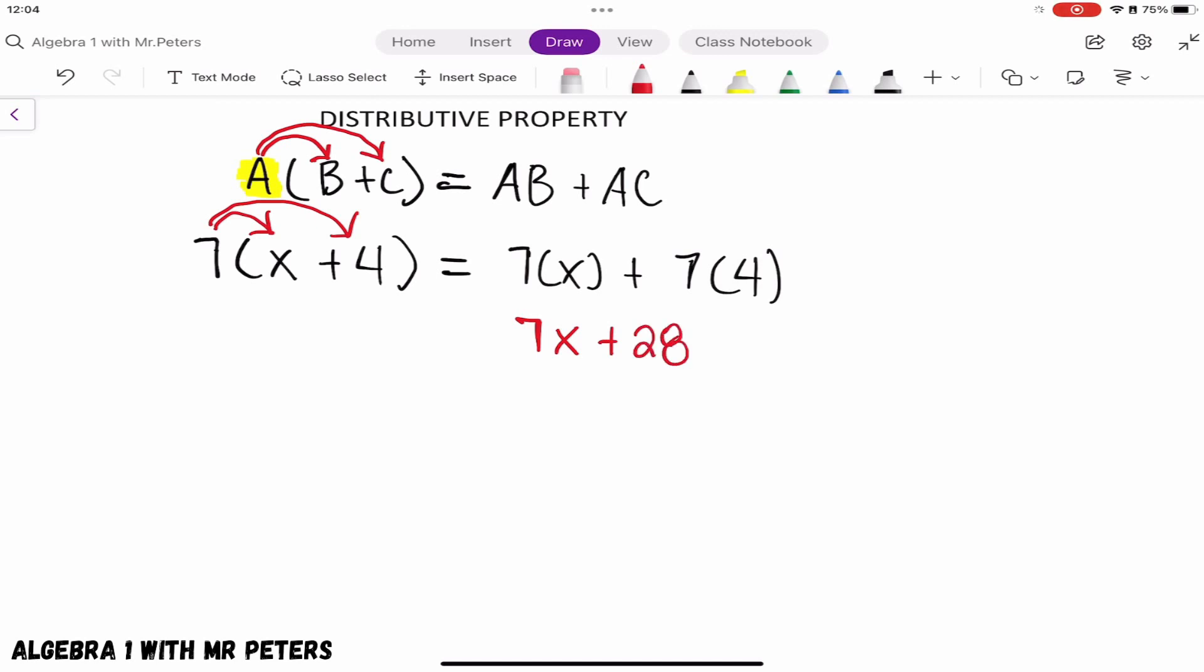We know that these aren't like terms. Now let's switch the problem up - instead of x plus 4, let's throw a subtraction sign in there and see how that changes the problem. So our second example: we have -4(y-3).